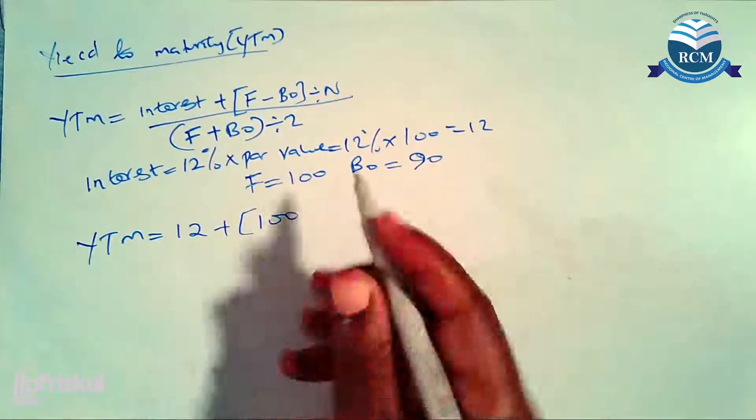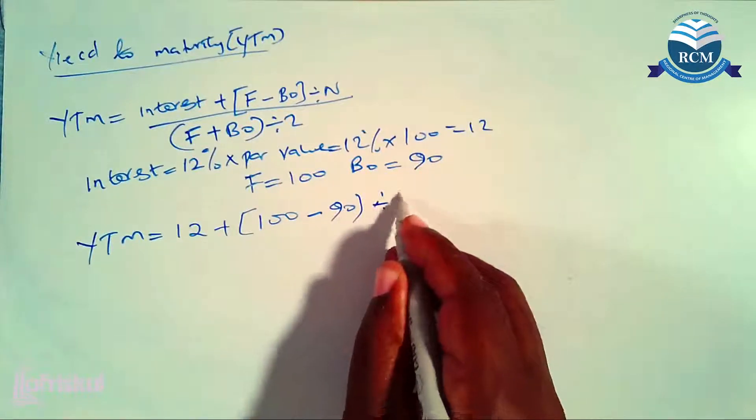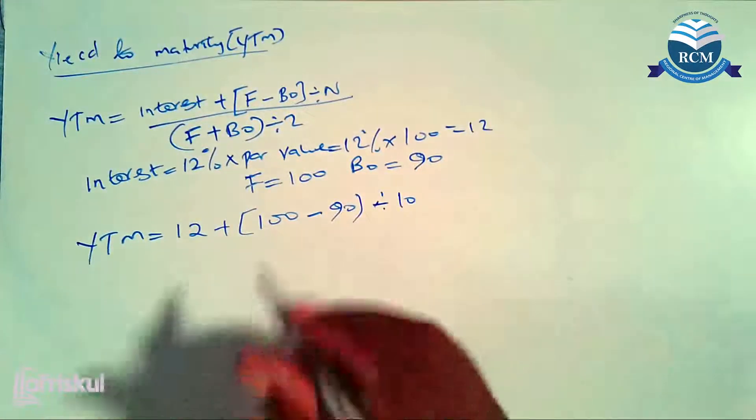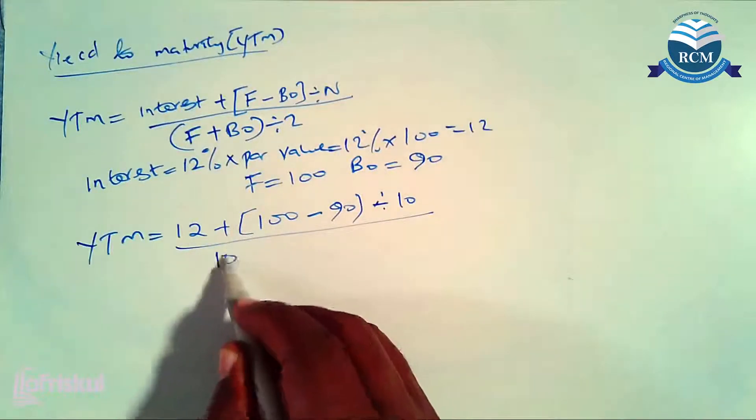Plus face value is 100 minus BO which is 90, divided by number of years are 10 years to maturity. Divided by we have your face value which is 100 plus 90 divided by 2, average investment.